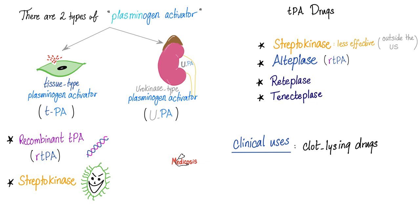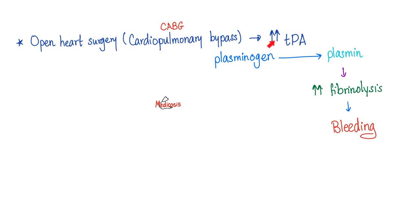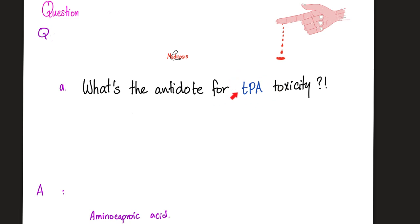TPA is naturally found in your body. To bust a clot for a pulmonary embolism, the doctor can give streptokinase (from strep pyogenes bacteria) or artificial alteplase, reteplase, tenecteplase — made by recombinant DNA technology mimicking streptokinase. After open heart surgery, TPA can go up because it comes from injured tissue, potentially causing bleeding. The antidote for TPA toxicity is aminocaproic acid — if you gave too much TPA, streptokinase, or alteplase, reverse it with aminocaproic acid.